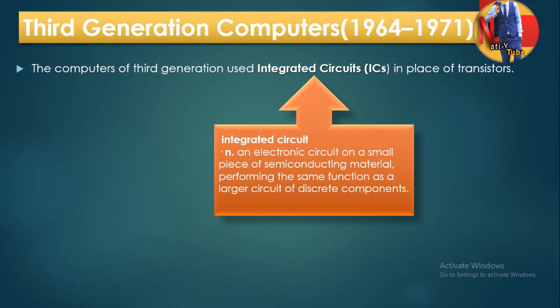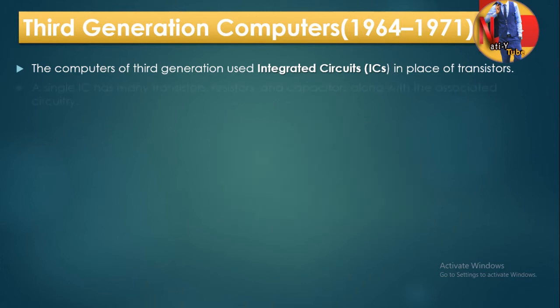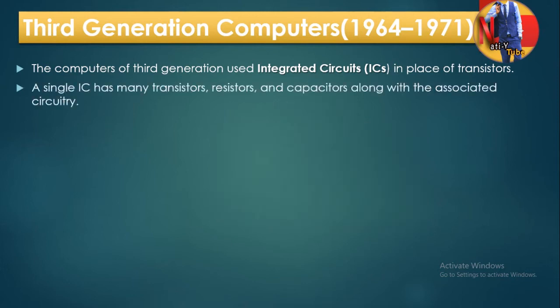In the third generation of computers, integrated circuits were used. A single IC fits within a small area, and an integrated circuit contains many transistors, resistors, and capacitors along with associated circuitry.